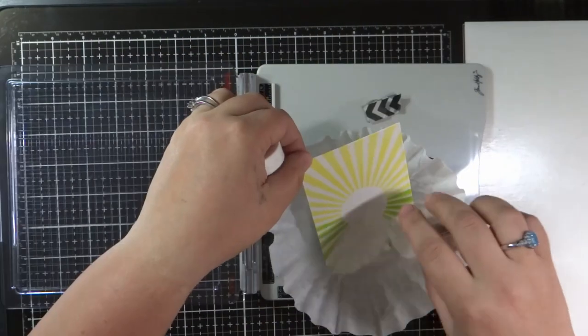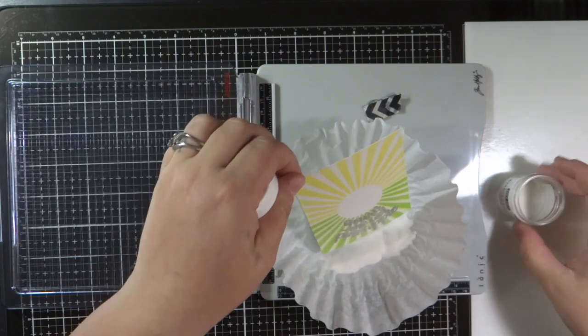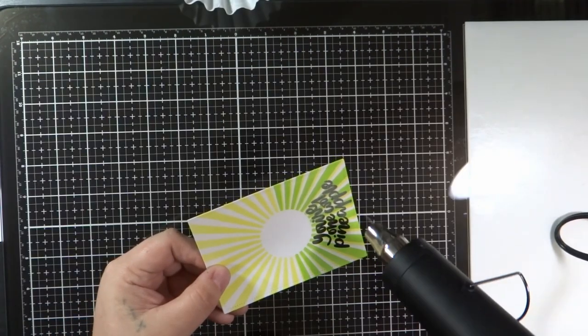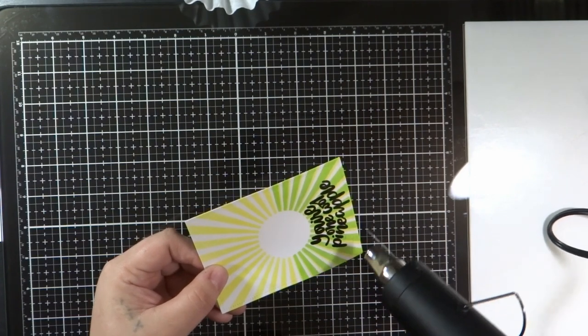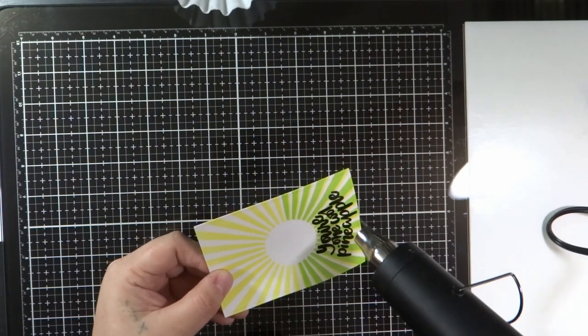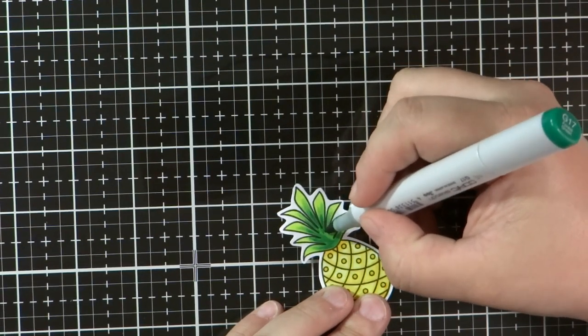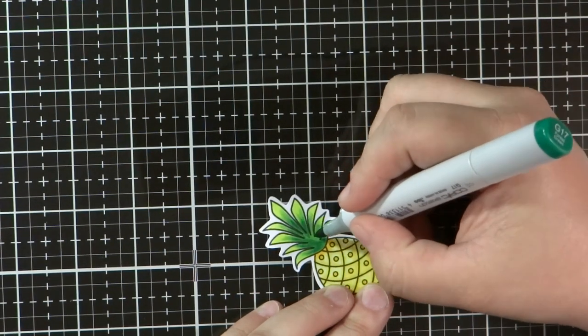I'm going to heat set that with my heat gun. And I've been letting that warm up to get it good and hot before I take it to that card stock, which prevents a lot of warping. I wanted the crown just a little bit deeper green. So I'm going over with a darker green.